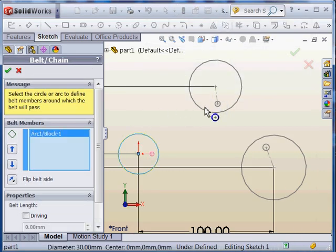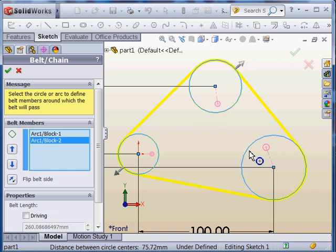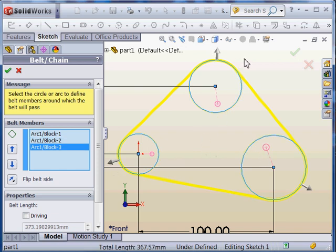You can build your belt by just clicking the outer diameters of your blocks, and you can reorientate the pulley system by just clicking on the arrow.